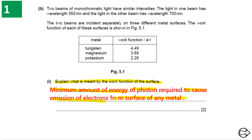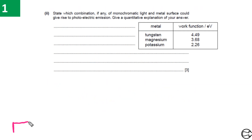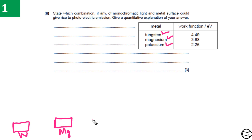We need to mention 'surface' and understand that different metals have different work functions. As we can see, we have three different metals with three different work function values. The three metals given in the table are tungsten (W), magnesium (Mg), and potassium (K).